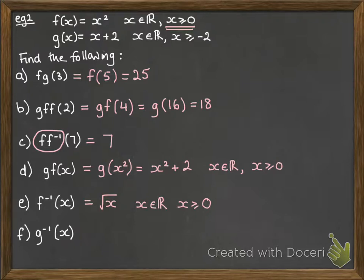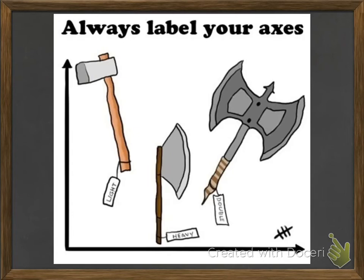We'll do the inverse on g as well. This would be x minus 2. It's a fairly simple one. Again, considering the domain on this one, x belongs to the real numbers, but we need to say where it's got that limit on it. On g(x), the smallest that x could be going into it is minus 2. If we put that minus 2 in, minus 2 plus 2 would give us 0. So the range of g(x) is 0. The smallest number that could come out of it would be 0. Therefore, the smallest number that could go into the inverse function is also 0. x is 0.